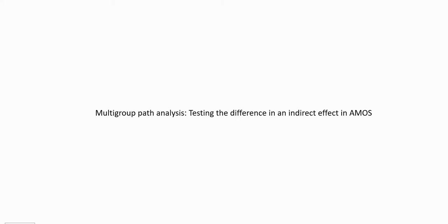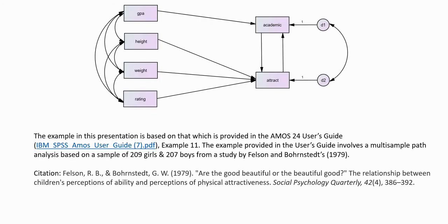Hi everyone. In this video, I wanted to provide a demonstration of how to test the difference between groups in an indirect effect using the AMOS program. This demonstration pivots off of a previous presentation on multi-group path analysis. I'll make sure to include a link underneath the video description to that previous presentation if you want to learn more about what I did in that particular demo.